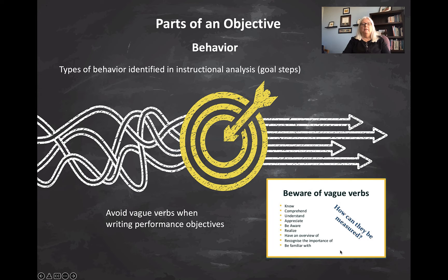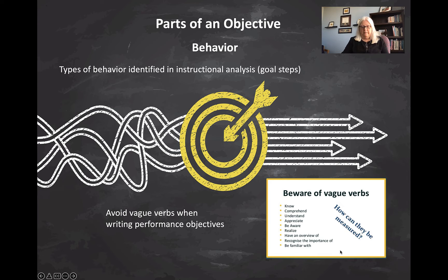The first part of an objective is the behavior, and you get this behavior from the goal step. We have to avoid using vague verbs when we go to write the objective from the goal statement. We can't say that the learner will 'know' how to do calculus, because I can't observe that. I can't look at someone and know that they know something. Same with words like 'comprehend,' 'understand,' 'appreciate,' and so forth. So we have to consider the verb very carefully used to describe the behavior.